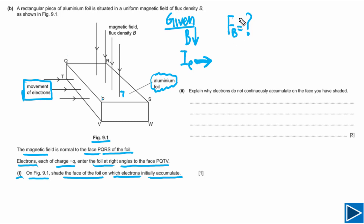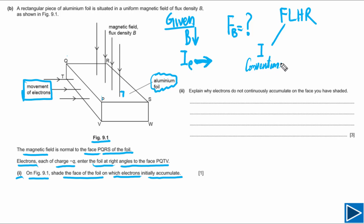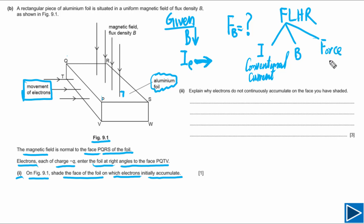To find the direction of magnetic force on the electrons, we use Fleming's left-hand rule. This rule is used for conventional current — that is, due to flow of positive charges. When we have the direction of conventional current and the direction of magnetic field, we can find the force. In Fleming's left-hand rule, the thumb points in the direction of force and the first finger points in the direction of the magnetic field.